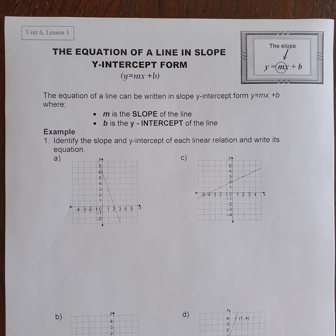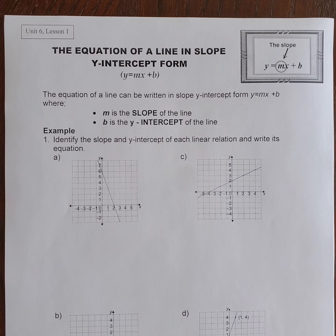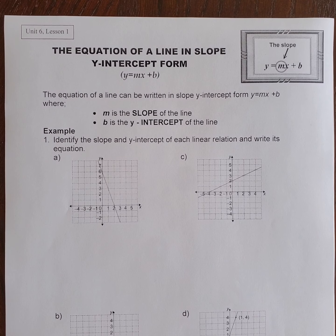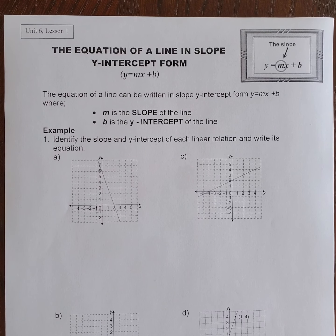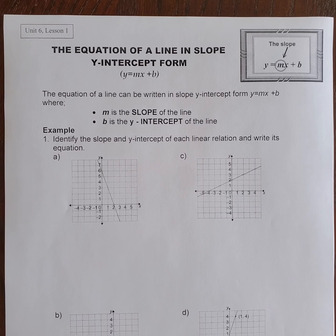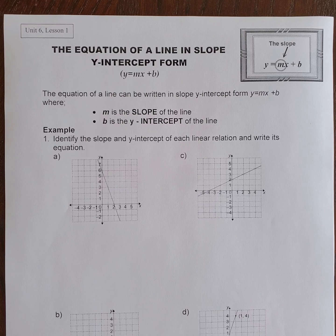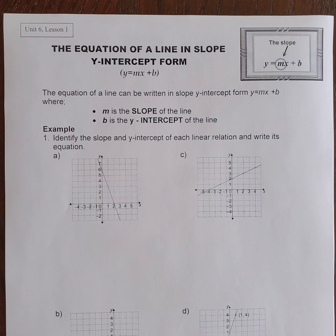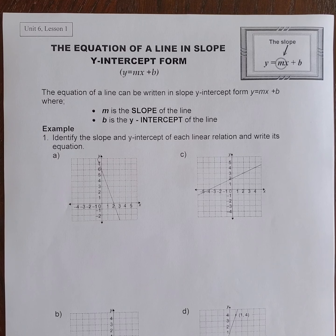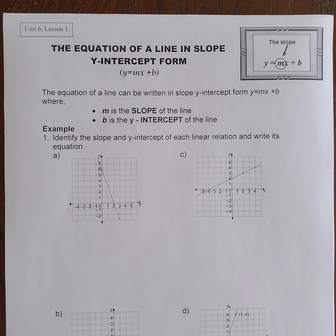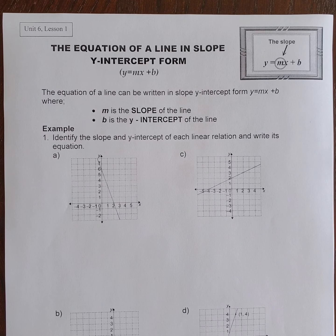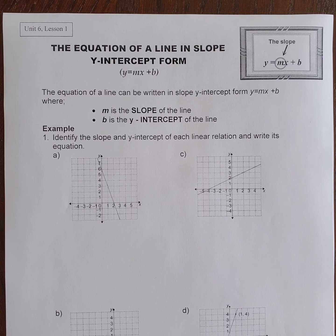Unit 6, Lesson 1, Part 1: The Equation of a Line in Slope-Intercept Form. We have just completed Unit 5, where we looked at slopes of lines. So in Unit 6, we're going to be looking more in detail into the equation of a line. This first lesson is called The Equation of a Line in Slope-Intercept Form.